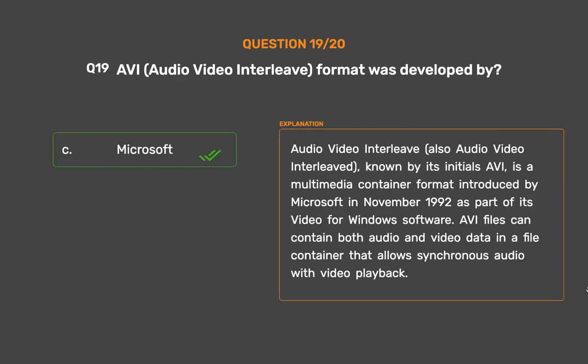Audio-Video Interleave, also known by its initials AVI, is a multimedia container format introduced by Microsoft in November 1992 as part of its Video for Windows software. AVI files can contain both audio and video data in a file container that allows synchronous audio with video playback.